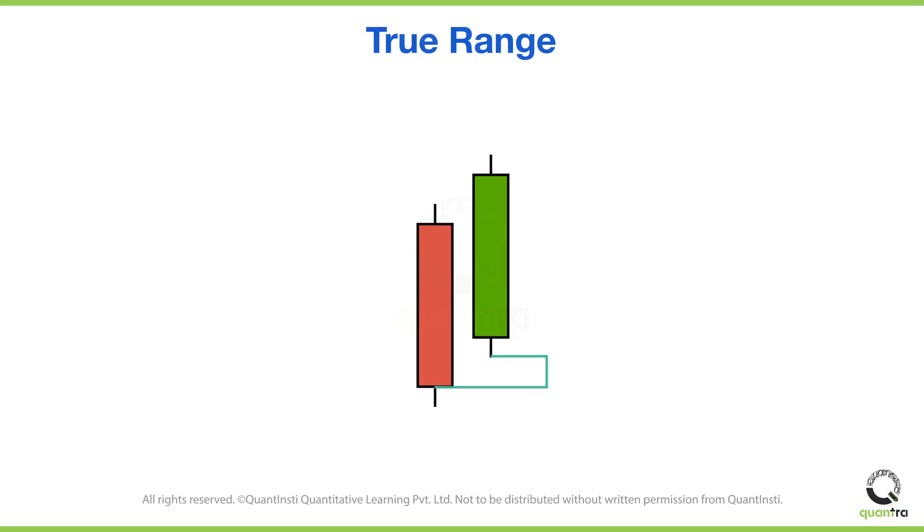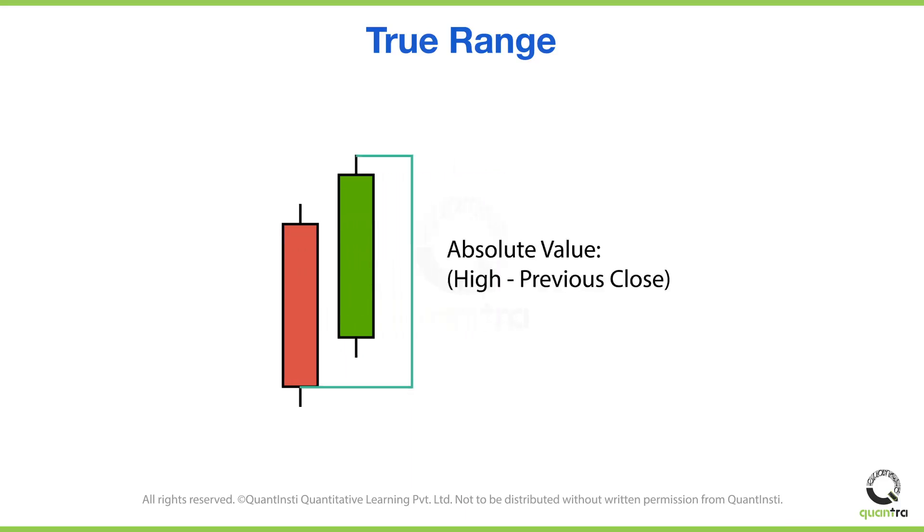In this case, while calculating the true range for the day, we will also account for this gap. Thus our true range for the day would be equal to the absolute value of today's high minus the previous close.